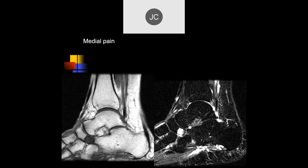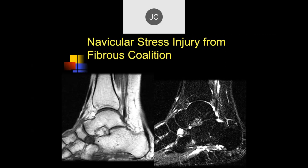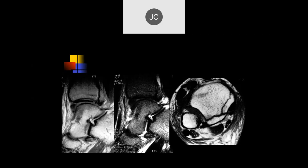This case shows a calcaneonavicular coalition — one of the more common coalitions around the ankle. This was a fibrous coalition, which produced increased stress on the lateral aspect of the navicular. The coalition limits normal motion and generates abnormal stress on surrounding bones, contributing to a painful condition that may require immobilization.